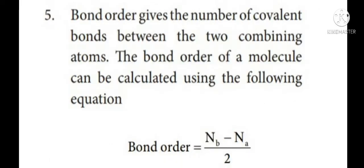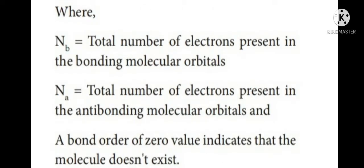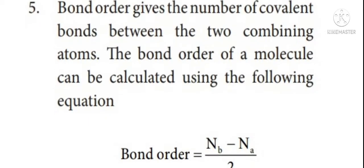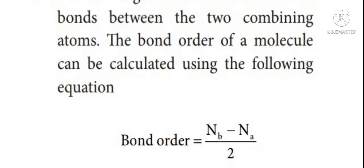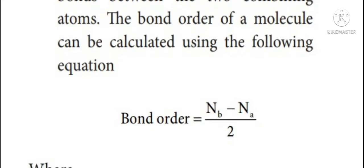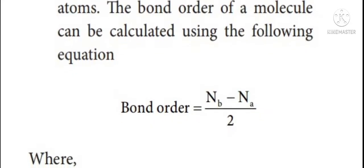Fifth point: bond order gives the number of covalent bonds between two combining atoms. The bond order of a molecule can be calculated using the formula: bond order equals Nb minus Na divided by 2, where Nb equals the total number of electrons present in bonding molecular orbitals, and Na equals the total number of electrons present in the antibonding molecular orbitals. If bond order equals 1, it shows a single bond is formed. If bond order equals 2, it shows a double bond is formed between the combining two atoms.